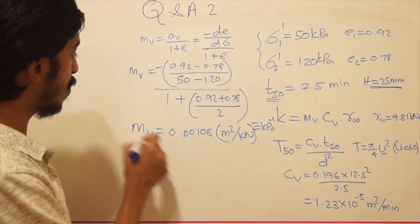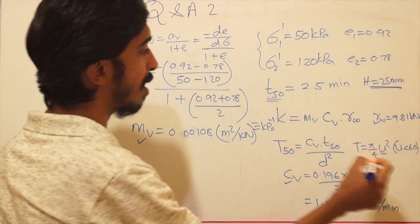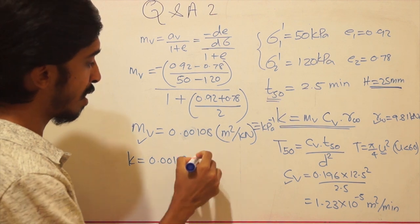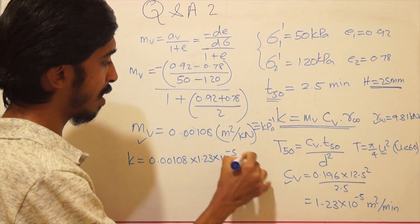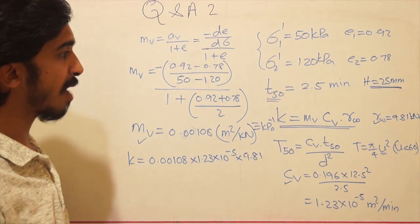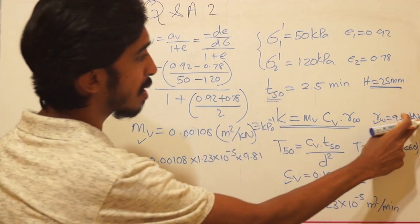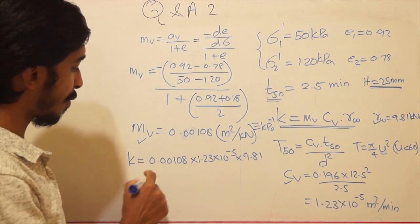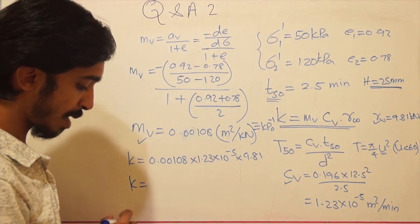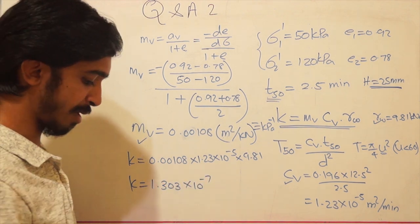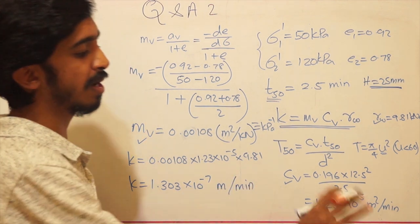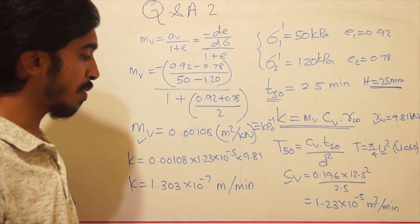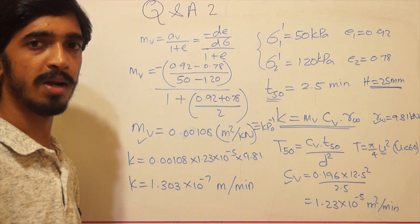Now that we know mv, cv, and γw, we simply multiply: k = mv × cv × γw = 0.00108 × 1.23×10⁻⁵ × 9.81. You must be careful about units — ensuring meters, kN, and minutes are consistent. After proper unit conversion, k = 1.303 × 10⁻⁷ m/min. This can also be converted to cm/s if needed.